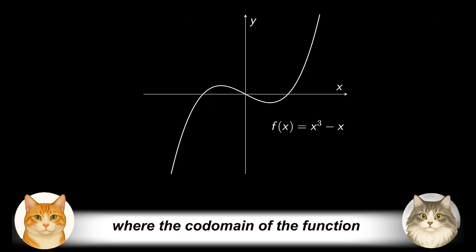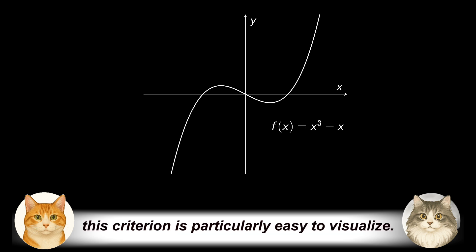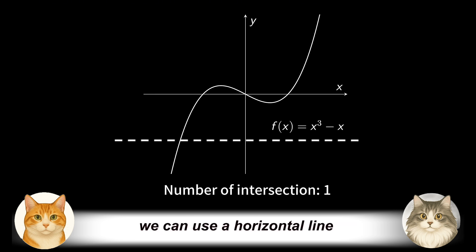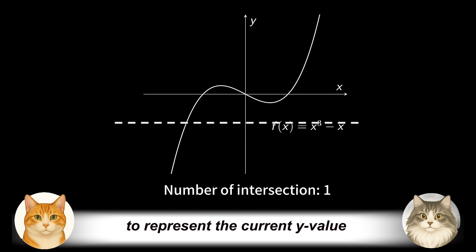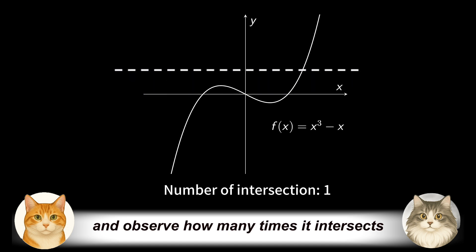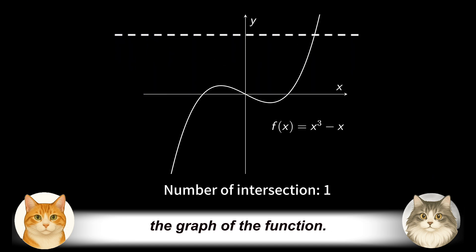In cases where the codomain of the function is the set of real numbers, this criterion is particularly easy to visualize. As y varies in the codomain, we can use a horizontal line to represent the current y value and observe how many times it intersects the graph of the function. Let us consider some examples.